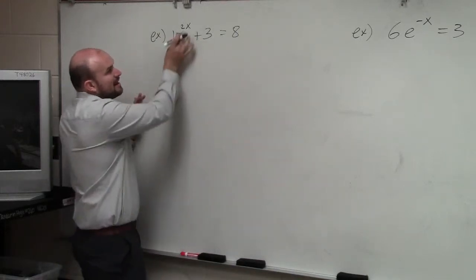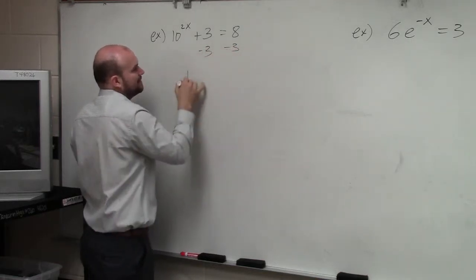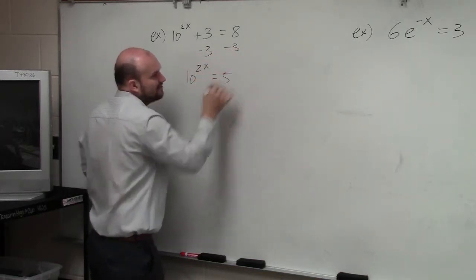Here you can see that my exponent is being added by 3. So the first thing I'm going to do is subtract by 3. Then I have 10 raised to the 2x equals 5.